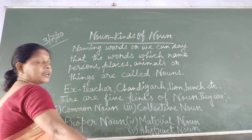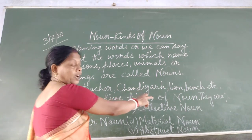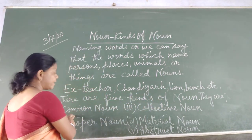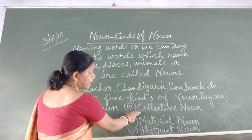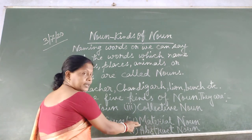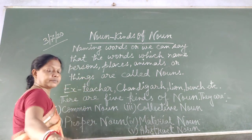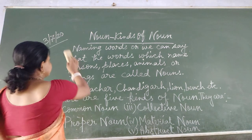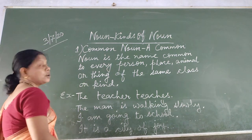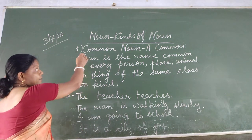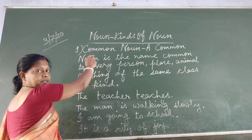Now we will see the kinds of nouns. There are five kinds of nouns: common noun, proper noun, collective noun, material noun and abstract noun. Let us start with the first kind of noun — common noun.